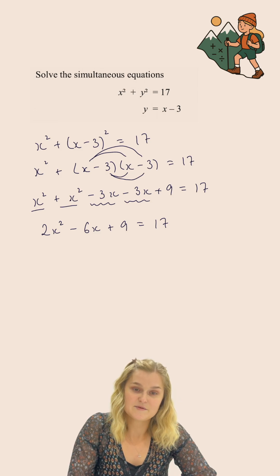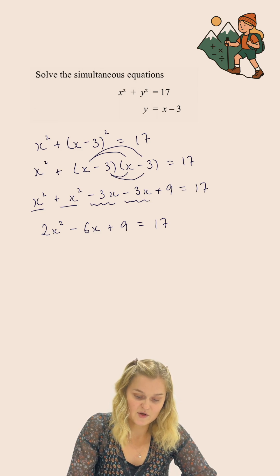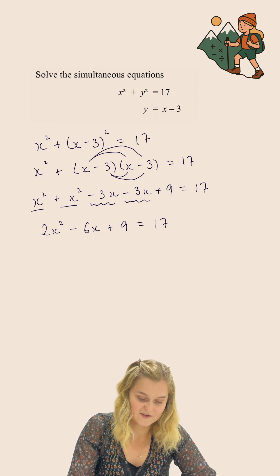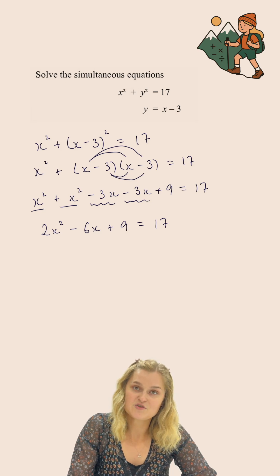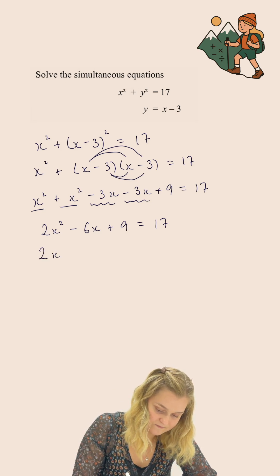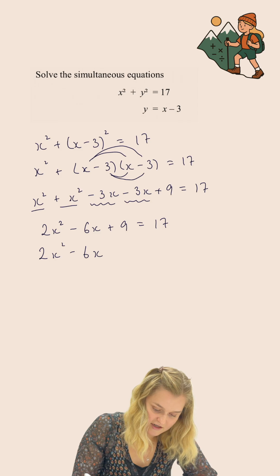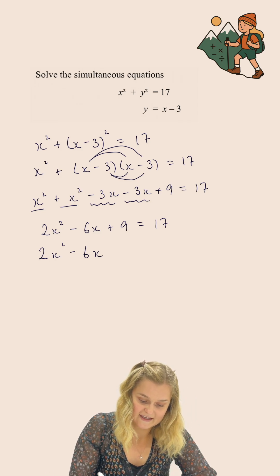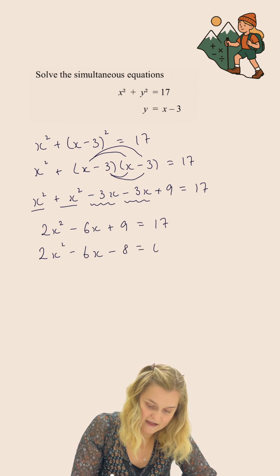I want to get this with 0 on one side, because to solve a quadratic, I need to have 0 on one side of the equation. So I'm going to subtract 17 from both sides. If I do that, I end up with 2x squared, subtract 6x, subtract 8, equals 0.